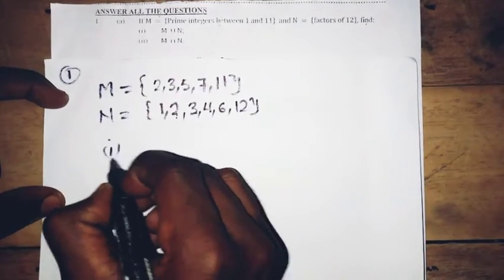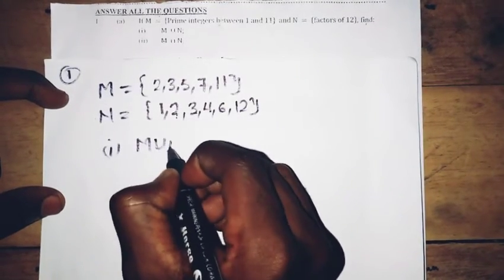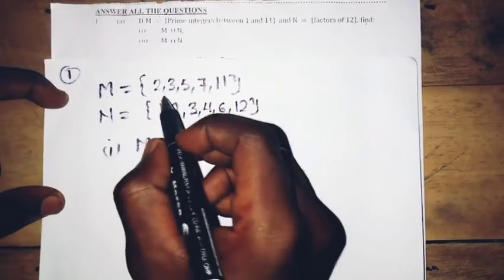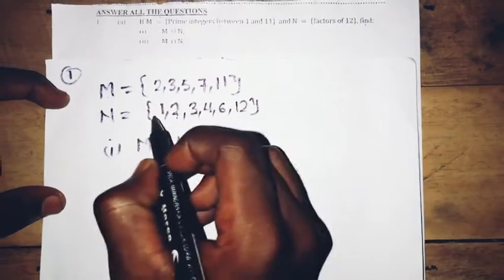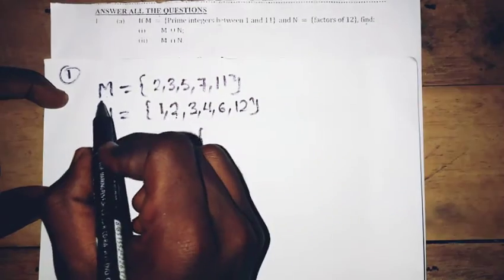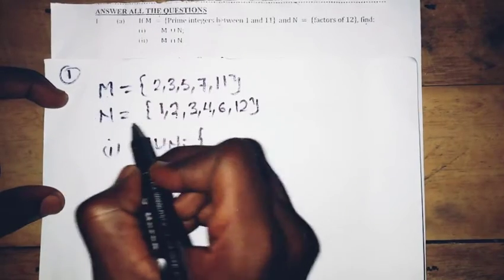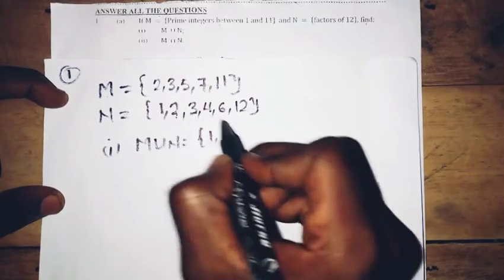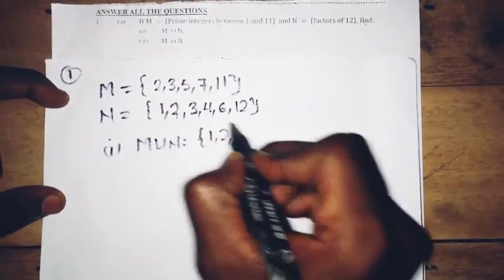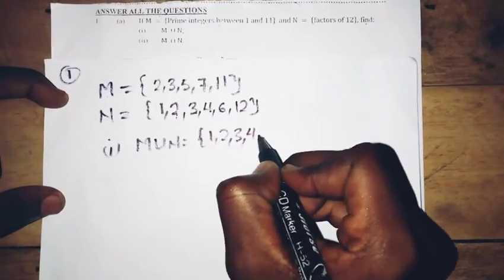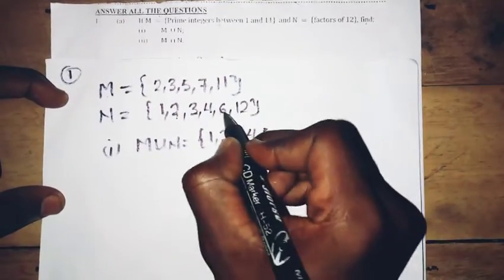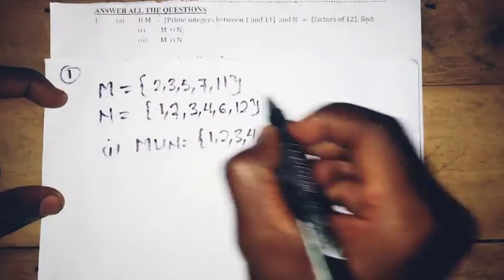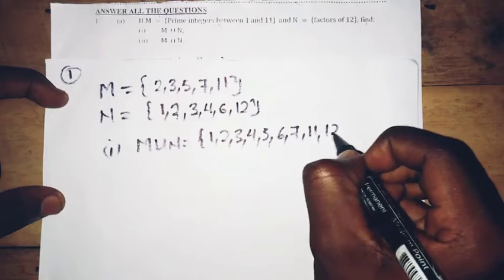Now we find M union N. Union means we bring all numbers together and arrange them in ascending order. So we have 1, 2, 3, 4, 5, 6, 7, 11, and 12.